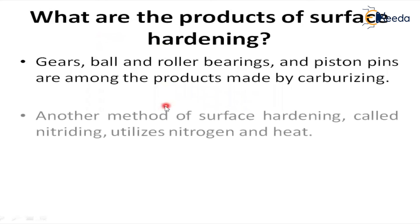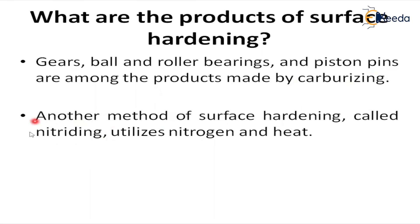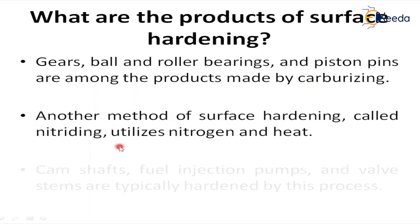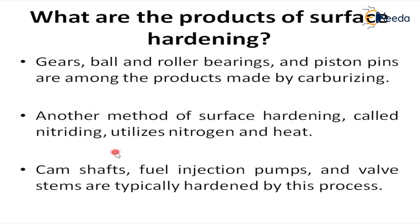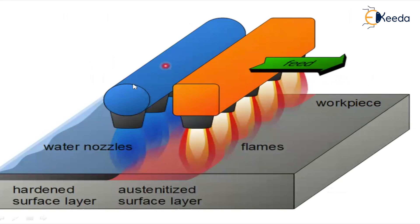Another method of surface hardening is nitriding, which utilizes nitrogen and heat. In carburizing, carbon is added to the surface; in nitriding, nitrogen is induced into the surface using heat, producing a very hard surface compared to other processes. Camshafts, fuel injection pumps, and valve stems are typically hardened by nitriding. Water nozzles are used for continuous cooling, and the material is first heated to austenite temperature before quenching.